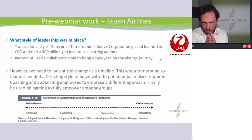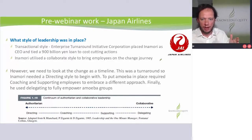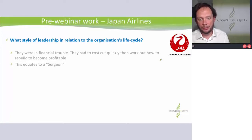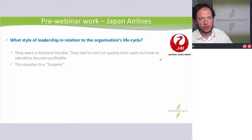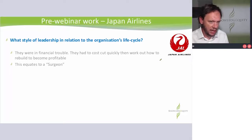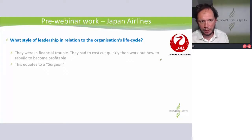The continuum across directing and delegating — authoritarian right down to much more collaborative on the other side. What style of leadership in relation to the organization's life cycle? They're in financial trouble — close to bankrupt. But I would say he came in as a surgeon. He came in to do change, not to shut down JAL. You could say JAL was right near the end of that curve — they filed for bankruptcy protection. But if you read the case about what Inamori is doing, he's acting like a surgeon, equating to the shakeout stage.